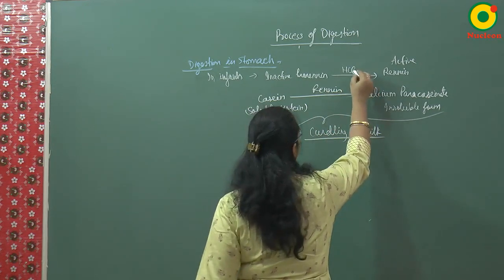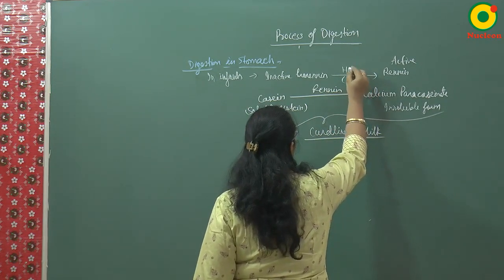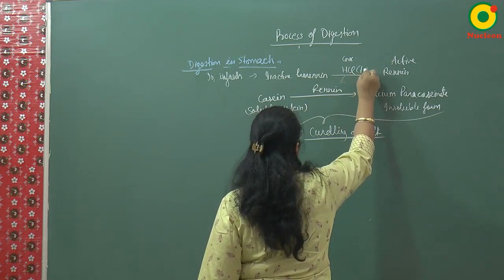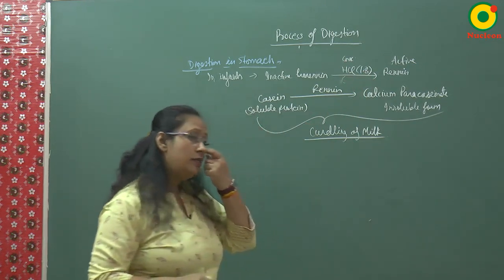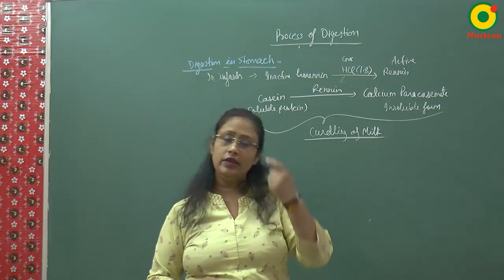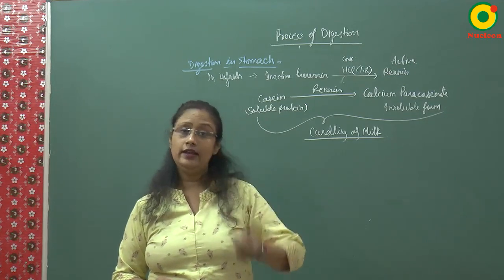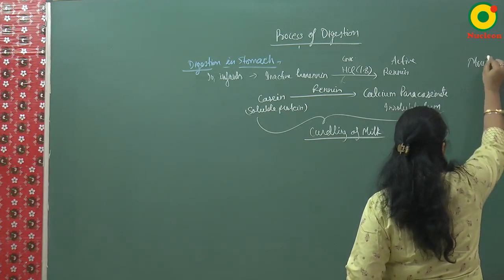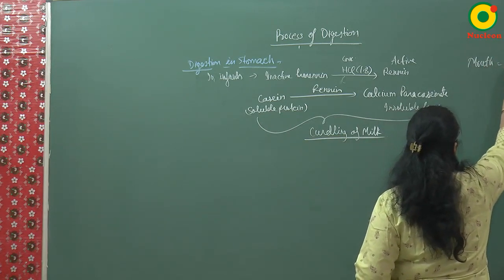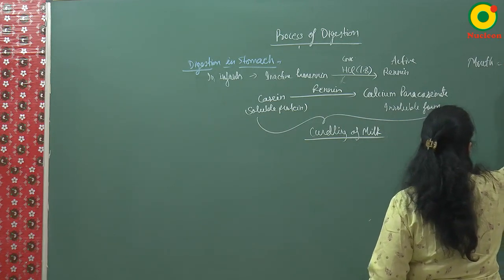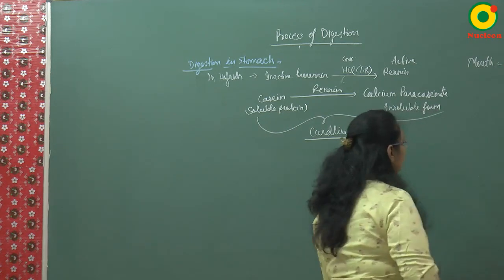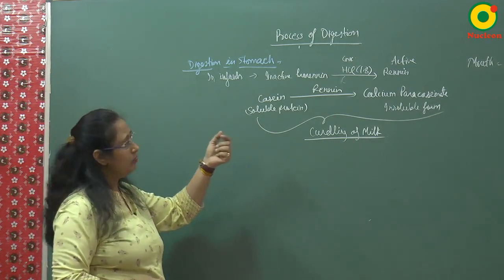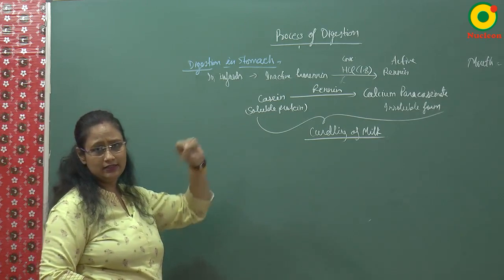HCl here is in highly concentrated form and its pH is 1.8. In comparison, when digestion is occurring in the mouth, the pH in the mouth is 6.8 — so it is slightly alkaline or very slightly acidic in the mouth.